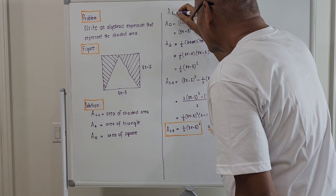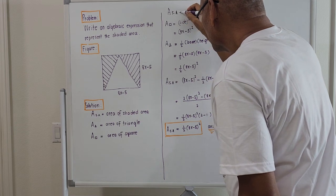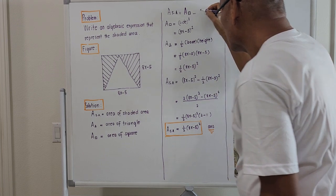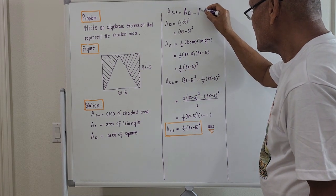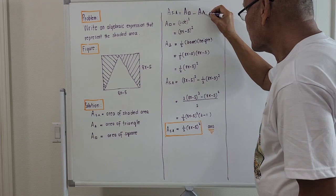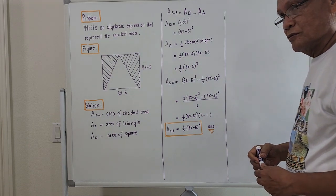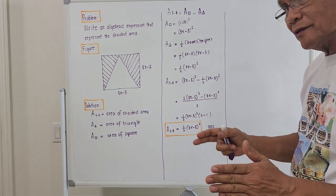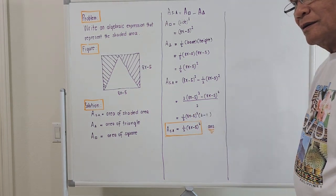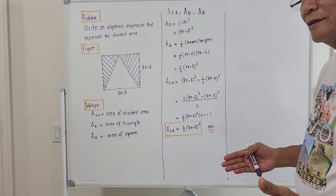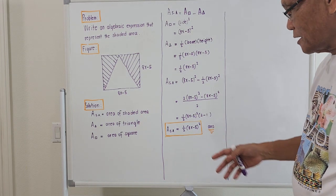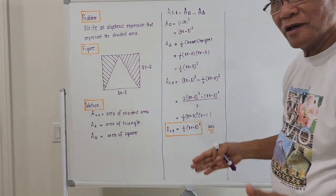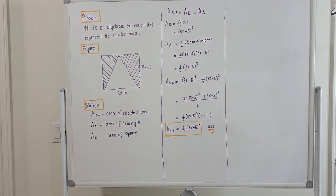The area of the shaded region will be the area of the square minus the area of the triangle. We are given two geometric figures: a square and a triangle. Luckily, the triangle has two equal sides — this side here and this side are equal, so it is an isosceles triangle.